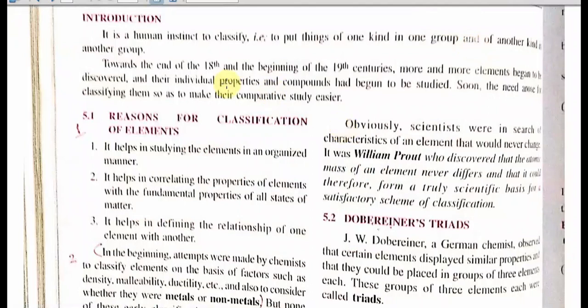In the periodic table chapter, the syllabus will cover Dobereiner's Triads, Newland's Law of Octave, Mendeleev's Contribution, Modern Periodic Law and Table, general ideas regarding Dobereiner's Triads, Newland's Law, Mendeleev's Periodic Law, Discovery of Atomic Number, the Modern Periodic Table comprising 18 groups and 7 periods, and last but not least, the alkali metal group 1, alkaline earth metal group 2, halogen group 17, and zero group inert gases.